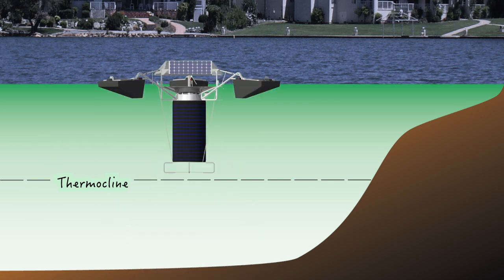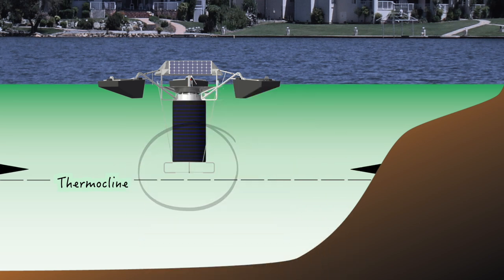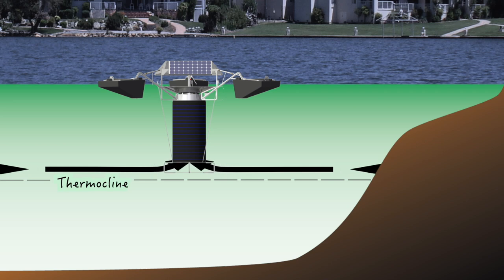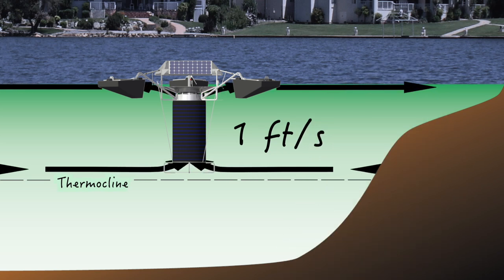So let's start circulating. You will see the Solar Bee intake is set just above the thermocline. As the machine begins operation, it starts to pull water from longer and longer distances at the depth where the intake is set. The water enters the intake traveling about one foot per second.